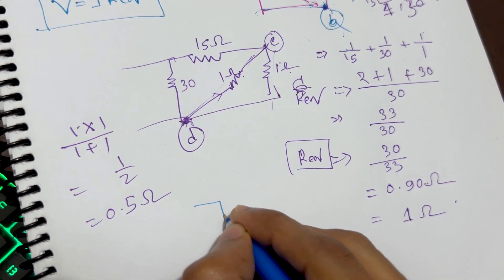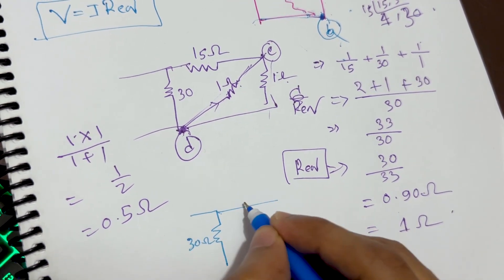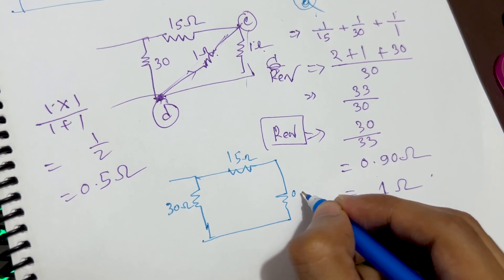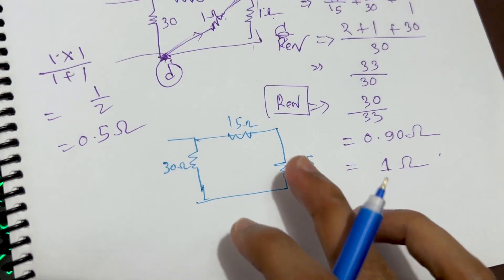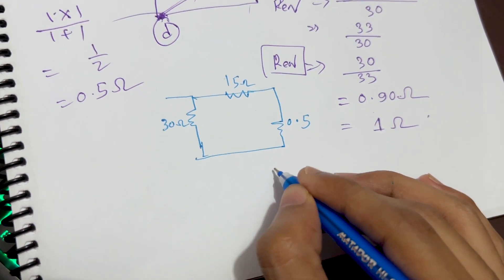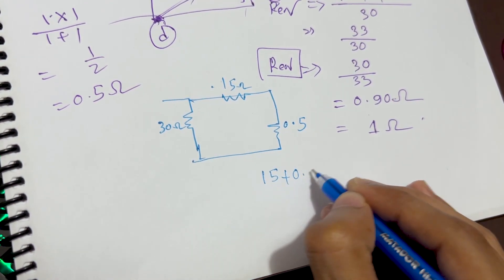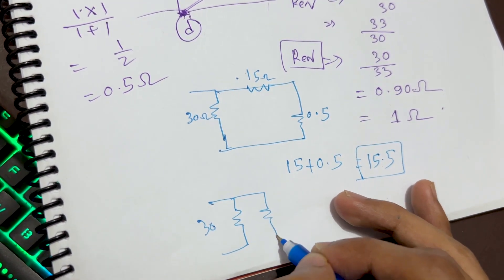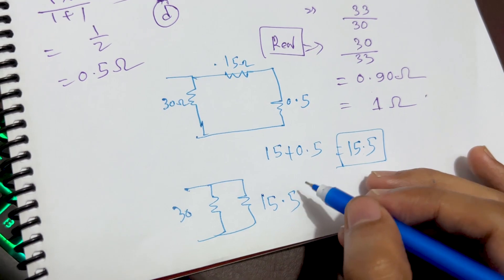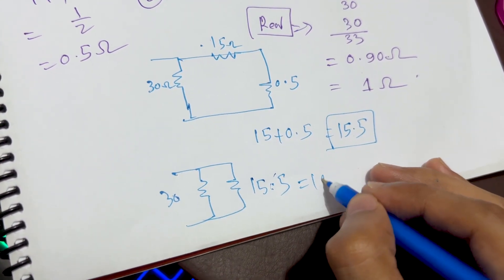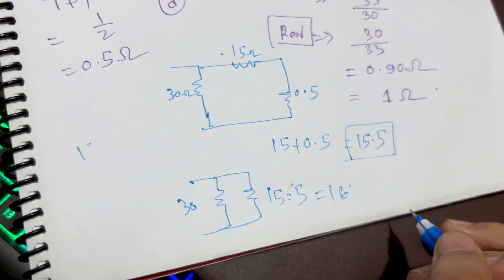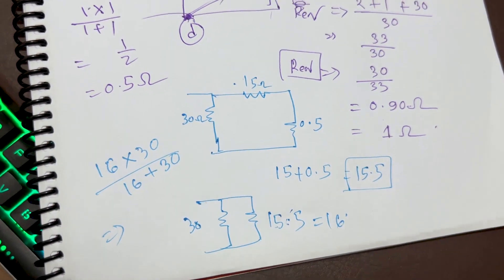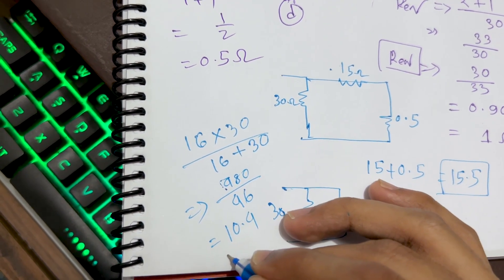We have 30 ohm and 15 ohm remaining, along with 0.5 ohm. The 15 ohm and 0.5 ohm are in series, giving 15.5 ohm. We approximate this as 16 ohm. Then 16 ohm and 30 ohm are in parallel: (16 × 30) / (16 + 30) = 480 / 46 ≈ 10.4 ohm.